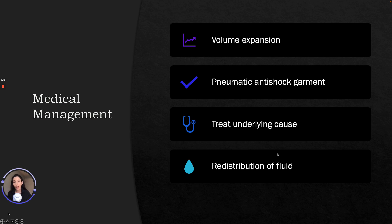There is also the pneumatic anti-shock garment, which counteracts bleeding and hypovolemia by slowing or stopping arterial bleeding, forcing available blood from the lower body to the brain, heart, and other vital organs, and preventing the return of circulating blood to the legs. It's also important to treat the underlying causes — if the patient is hemorrhaging we make efforts to stop the bleed, or if the cause is diarrhea or vomiting we can use medications to treat those. Redistribution of fluids via proper patient positioning also assists, such as a modified Trendelenburg position for hypovolemic shock.